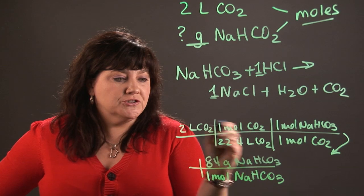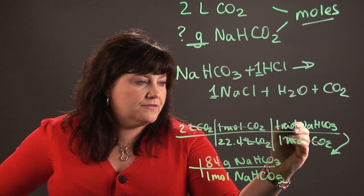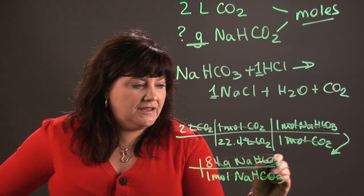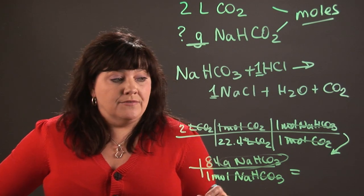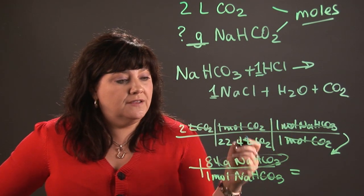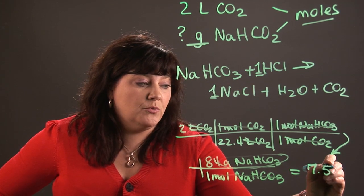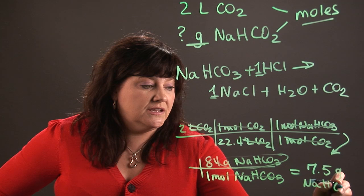Now I'm going to check and make sure that all my units cancel out. And then all I'm left with is grams of NaHCO3. So now it's just a question of doing the math. I'm going to have 2 times 1 times 84 divided by 22.4, and that's going to give me 7.5 grams of NaHCO3.